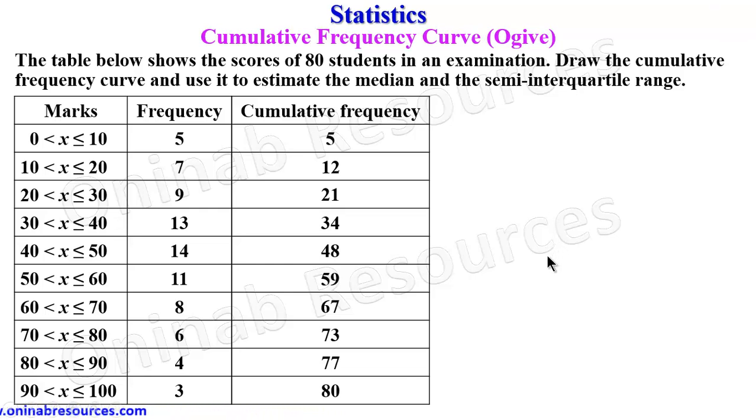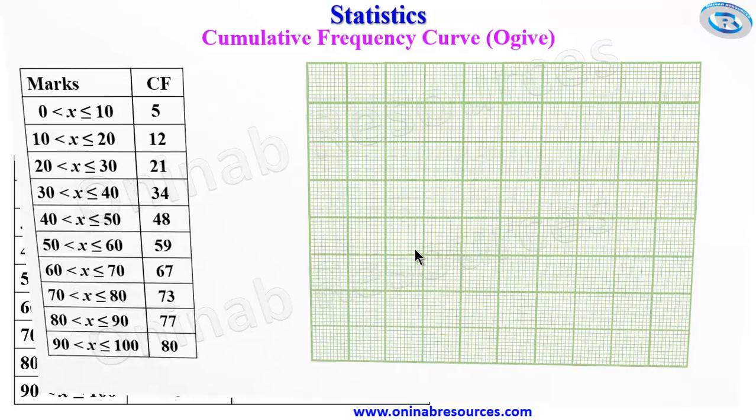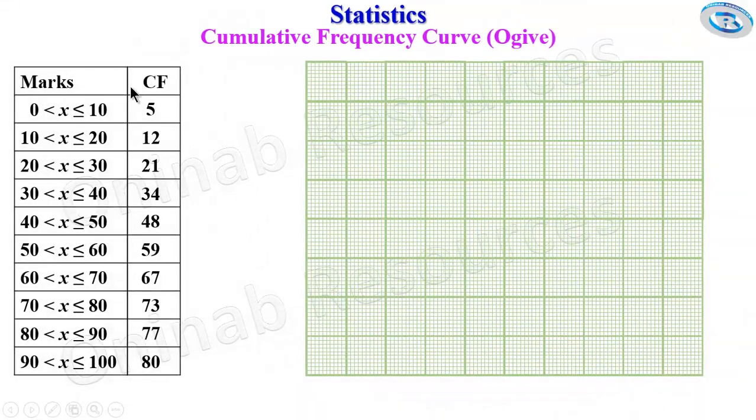We then go ahead to draw the cumulative frequency curve. Remember, it is going to be the upper class interval here. That is 0, 10, 20, 30, up to 100 against the cumulative frequency. So we have our graph here with the marks and the cumulative frequency. The x-axis here is going to represent the marks.